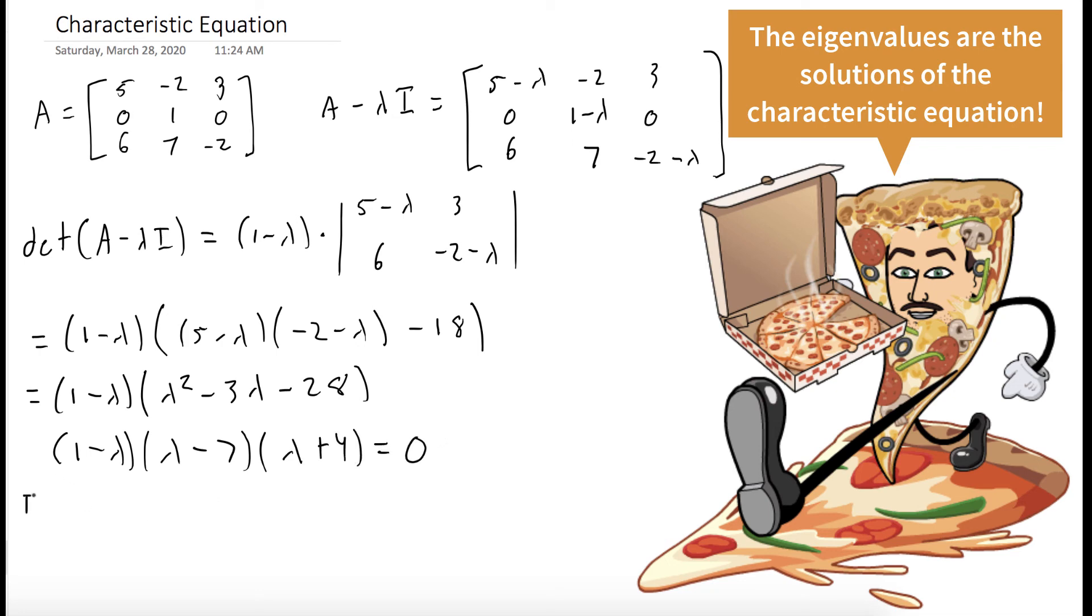In solving for lambda, we get our eigenvalues. So the eigenvalues are the solutions of the characteristic equation. So the eigenvalues of A are 1, 7, and negative 4.